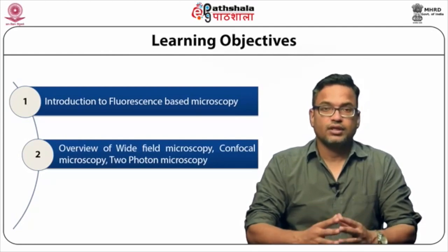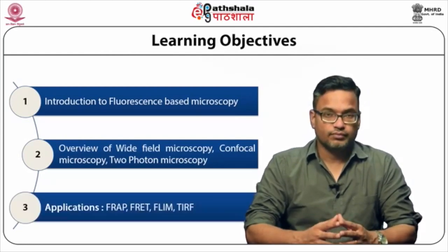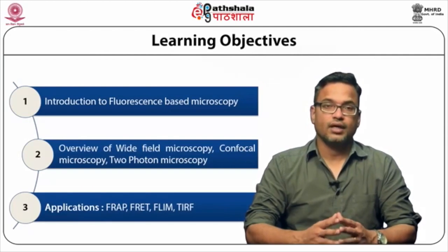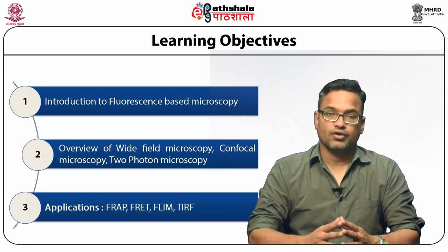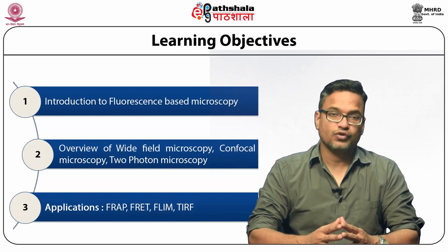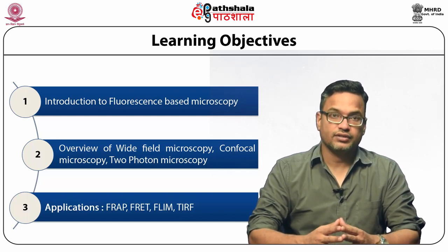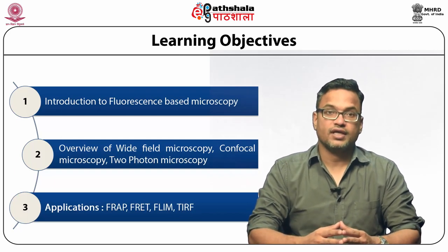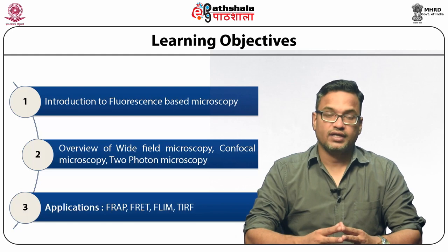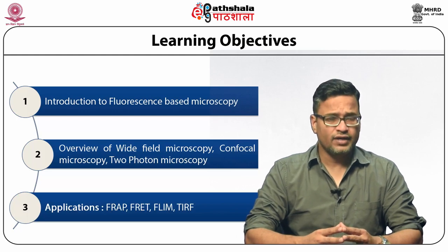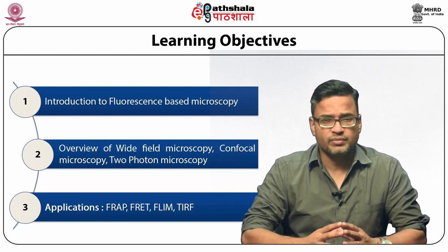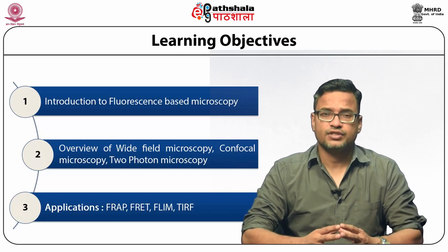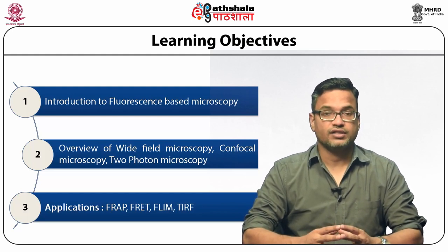There are three major fluorescent-based variants of fluorescent imaging: wide field, confocal microscopy, and two-photon microscopy. We will also discuss a few applications that are very well used and well known in the research area — FRAP, FRET, and FLIM. In the end, we will summarize how fluorescent imaging has enabled researchers to understand different biological questions.